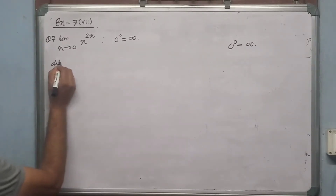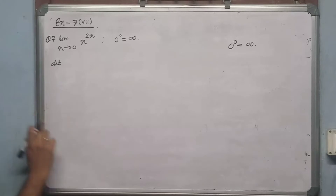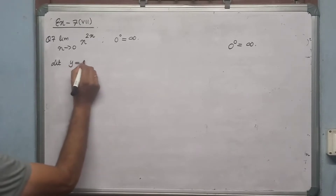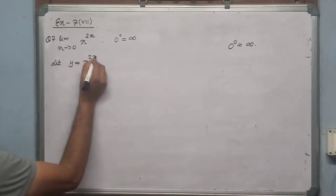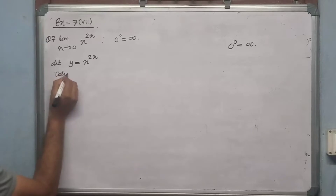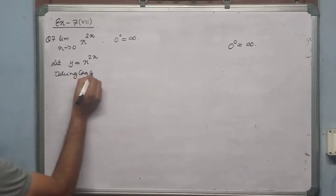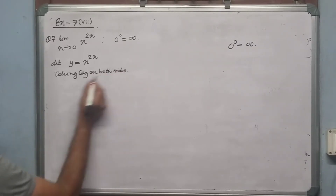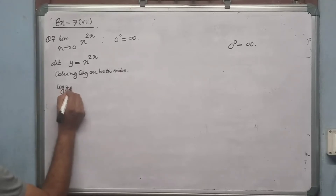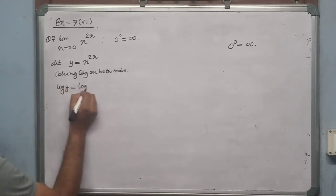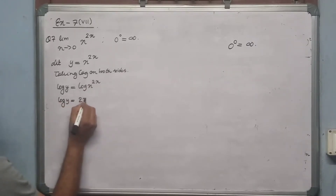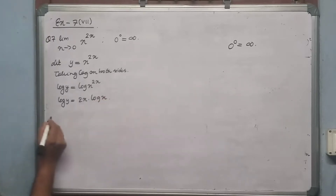This method is applicable when the expression is in the form of variable to the power variable. We consider y = x^(2x), then take log on both sides: log y = log(x^(2x)), which gives log y = 2x·log x.